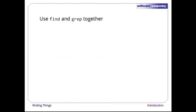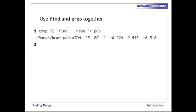It's very common to use find and grep together — the first finds files that match a pattern, the second looks for lines inside those files. Here, for example, we can find PDB files that contain iron atoms by looking for the string 'fe' in all the PDB files below the current directory. If you've forgotten your high school chemistry, Fe is the atomic symbol for iron.